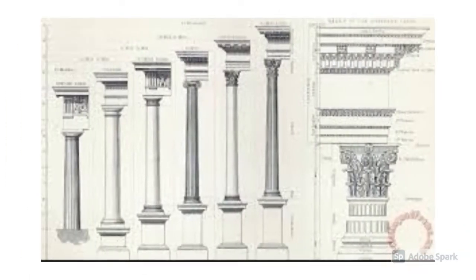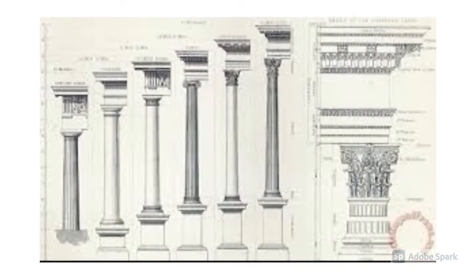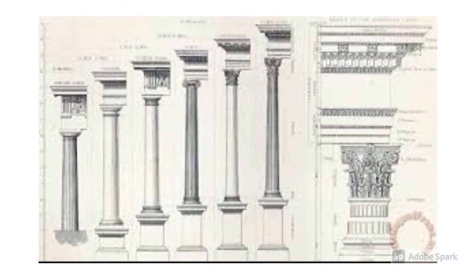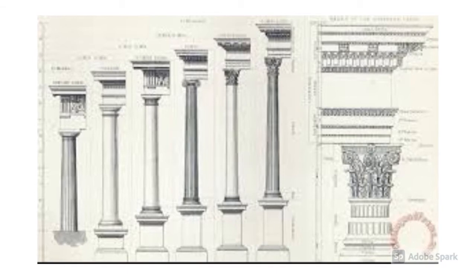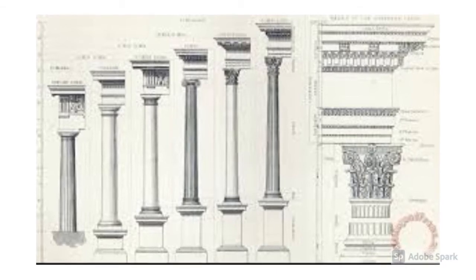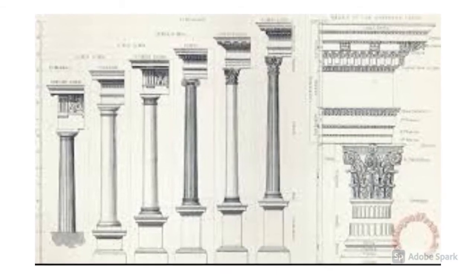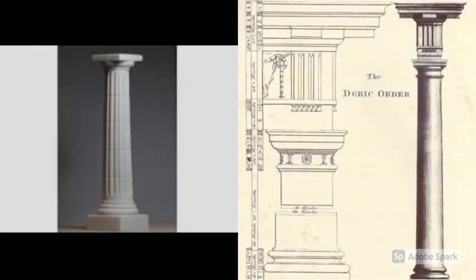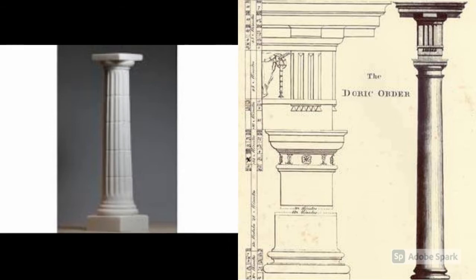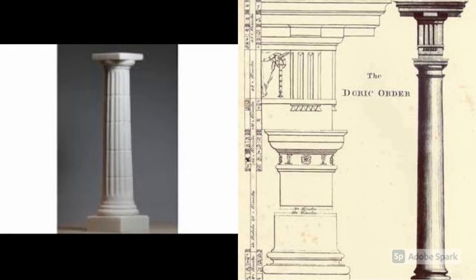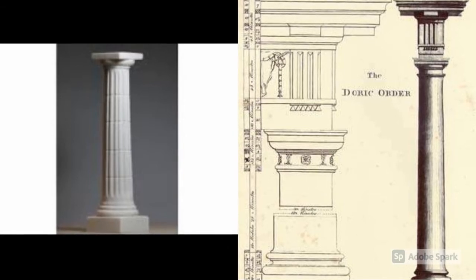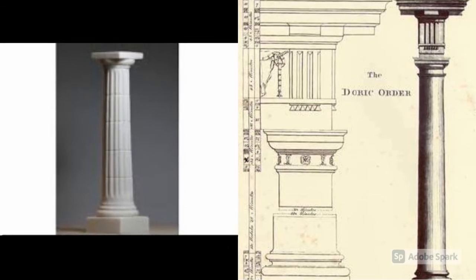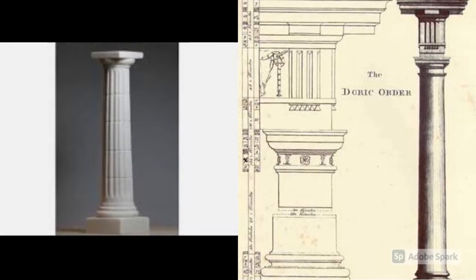He developed five styles of architecture: Doric, Tuscan, Ionic, Corinthian, and Composite. The Doric is the smallest of all orders. The capital consists of simple necking and a square abacus.